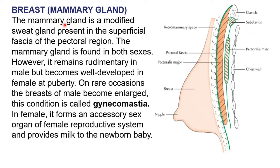The mammary gland is a modified sweat gland. It is present in the superficial fascia in the pectoral region. The breast is present in both sexes but is more prominent and well-developed in females. If the breast is well developed in a male due to some hormonal problem, it is called gynecomastia.